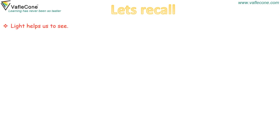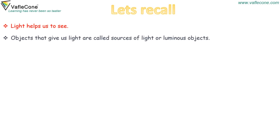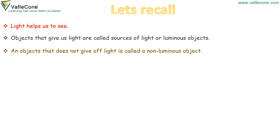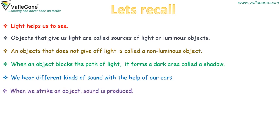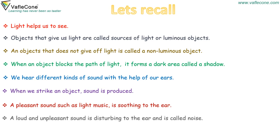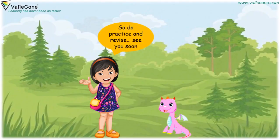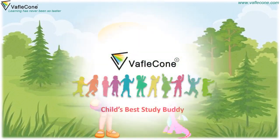Let's recall. Light helps us to see. Objects that give us light are called sources of light or luminous objects. An object that does not give off light is called a non-luminous object. When an object blocks the path of light, it forms a dark area called a shadow. We hear different kinds of sounds with the help of our ears. When we strike an object, sound is produced. A pleasant sound, such as light music, is soothing to the ear. A loud and unpleasant sound is disturbing to the ear and is called noise. Too much noise can harm our ears and cause deafness. So do practice and revise. See you soon. Bye-bye. Thank you.